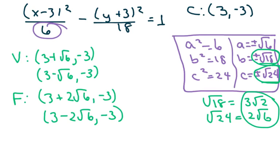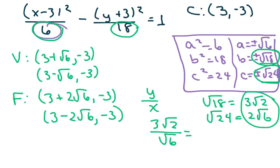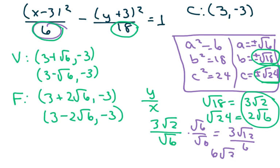The slope of the asymptotes is b over a, which is √18 over √6. That's 3√2 over √6. Multiplying by √6/√6 gives 3√12 over 6, which simplifies to 6√3 over 6, equaling √3. So the asymptote slopes are ±√3. This is based on a² + b² = c².